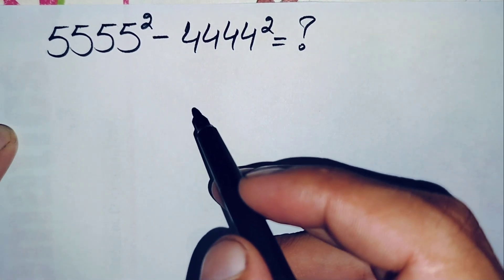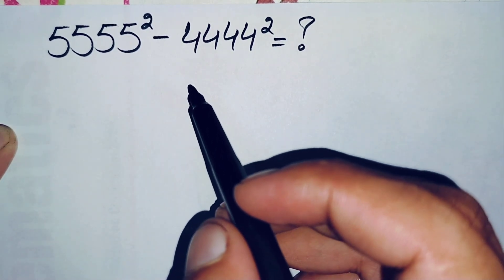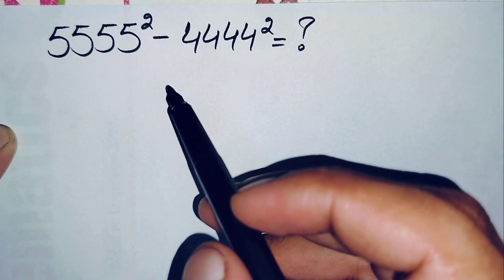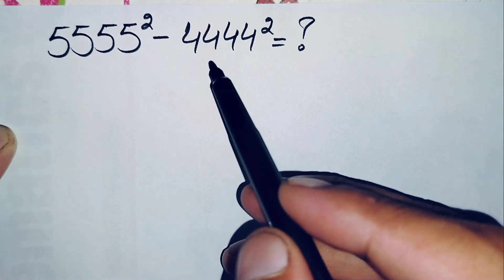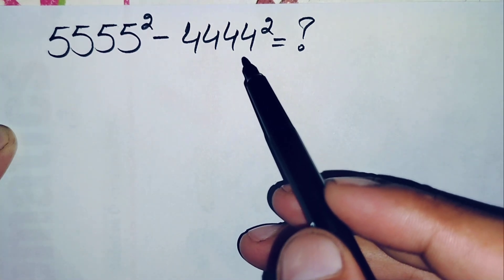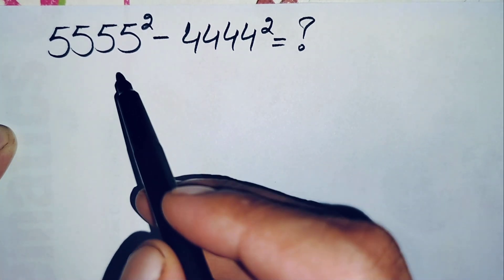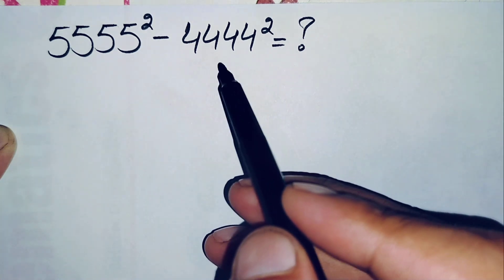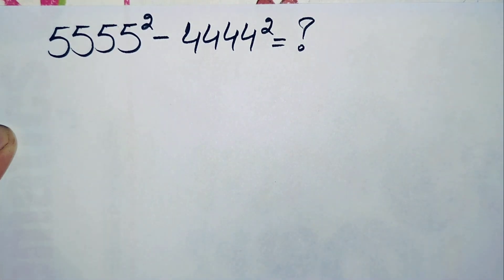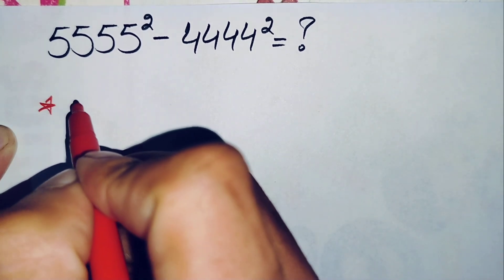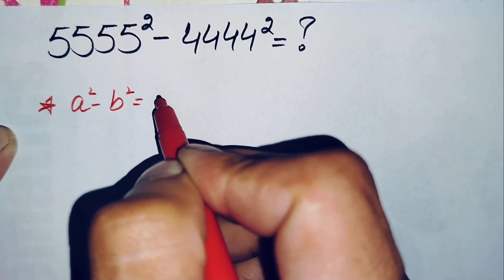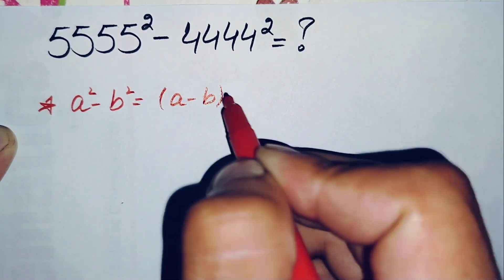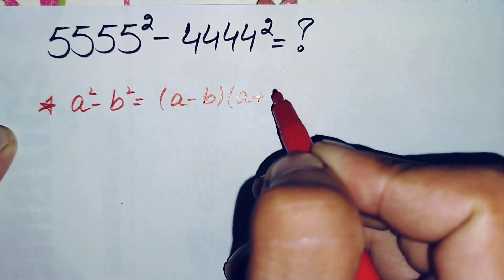Hello everyone, welcome. How to solve and find the value of this nice simplification math problem: 5,555 squared minus 4,444 squared. Since there is a square on both terms, we will use the difference of squares algebraic identity — a squared minus b squared, which is equal to a minus b times a plus b.